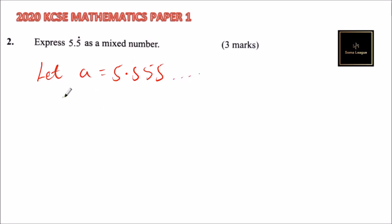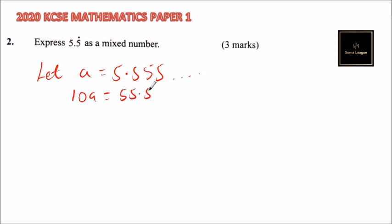If you multiply this by 10, you say 10A — that is, 10A is equal to 55.555, because it is a recurring decimal.